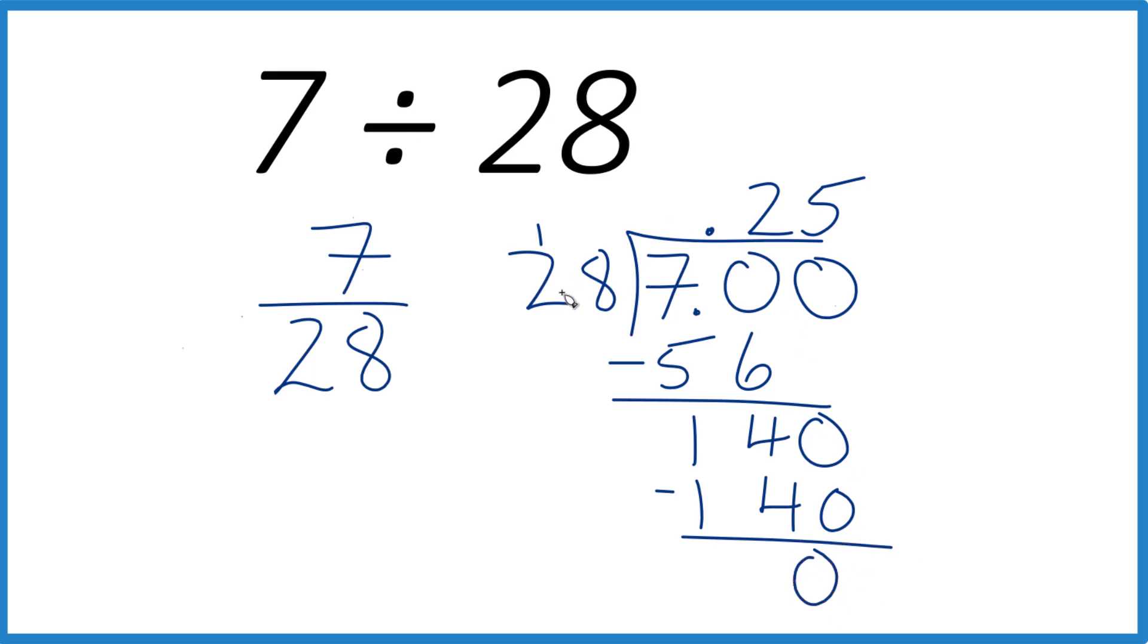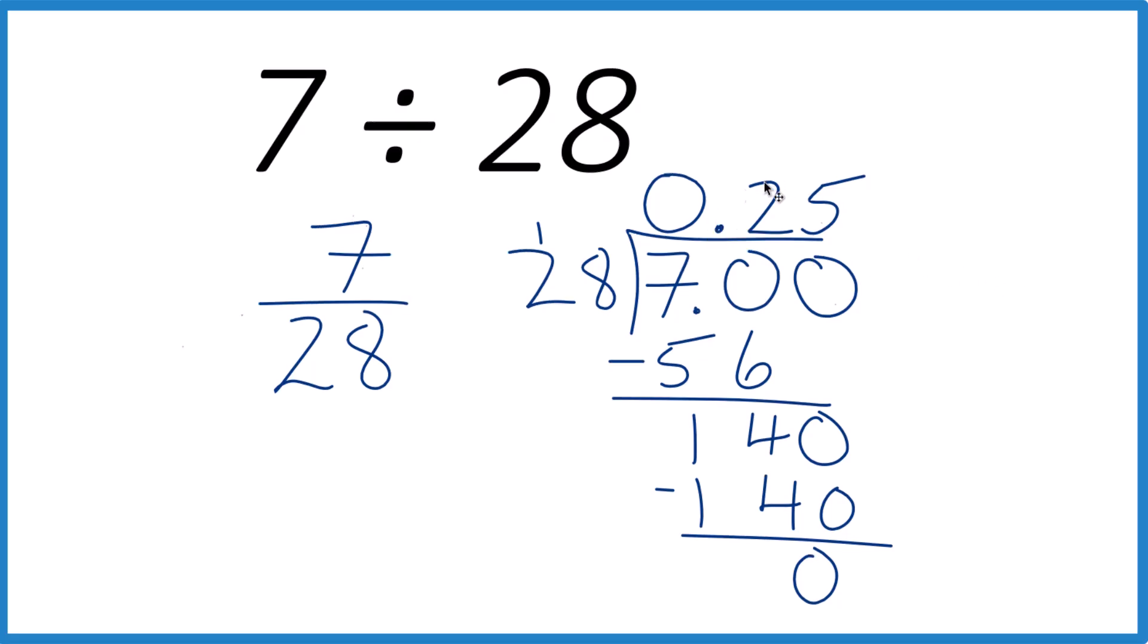So 28 goes into 7, 0.25 times. We could put a 0 out here, just so we make sure we don't forget about that decimal point. If you take 0.25 times 28, you will get 7. That's it.